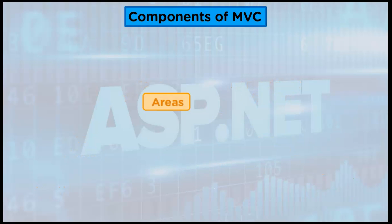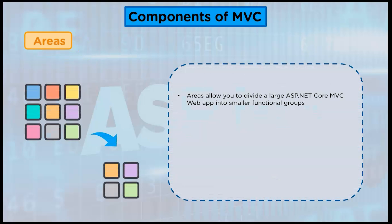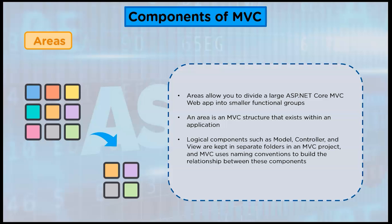Last we have areas. Logical components such as model, controller, and view are kept in separate folders in an MVC project. MVC uses naming conventions to build a relationship between these components. It may be good to partition a large app into different high-level functional regions. For example, consider an e-commerce app with numerous business units such as checkout, billing, and search, among others. Each of these units has its own set of logical components — views, controllers, and models.